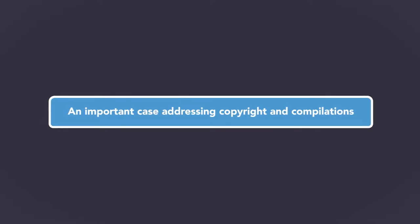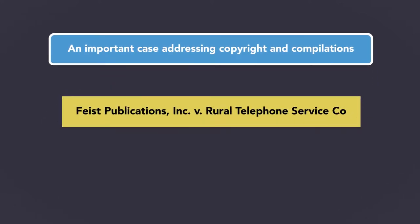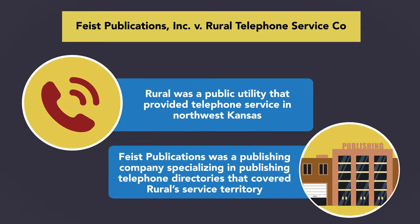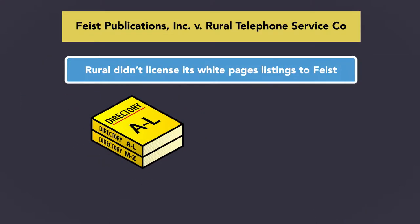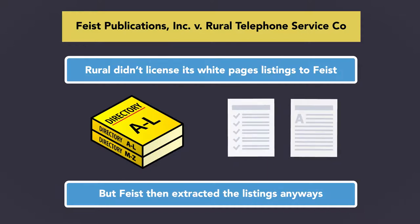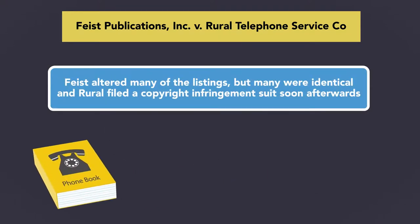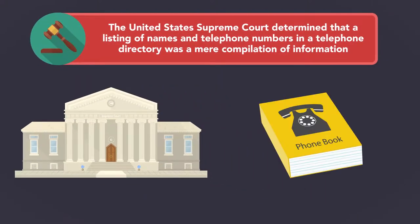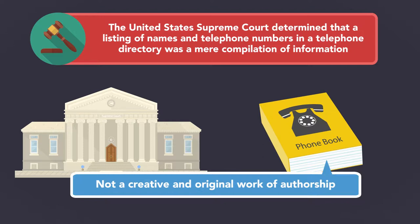An important case addressing copyright in compilations is Feist Publications, Inc. v. Rural Telephone Service Co. Rural was a public utility that provided telephone service in Northwest Kansas, and Feist Publications was a publishing company that specialized in publishing telephone directories that covered Rural's service territory. Rural didn't license its White Pages listings to Feist, but Feist then extracted the listings anyways. Feist altered many of the listings, but many were identical. Rural filed a copyright infringement suit soon afterwards. The United States Supreme Court determined that a listing of names and telephone numbers in the telephone directory was a mere compilation of information, not a creative and original work of authorship.